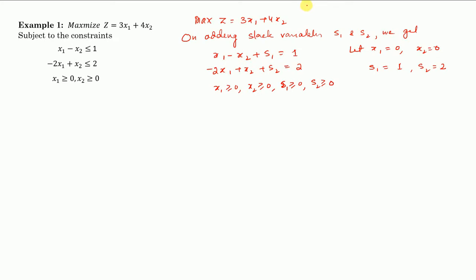The corresponding matrix can be written as [1, -2; -1, 1; 1, 0; 0, 1]. The submatrix corresponding to the basic variables s1 and s2 is the identity matrix [1, 0; 0, 1]. Since it is a unit matrix, this choice is correct — this is the initial basic feasible solution. So s1 and s2 are basic variables, and x1 and x2 are non-basic variables. We can now proceed to make the first simplex table.